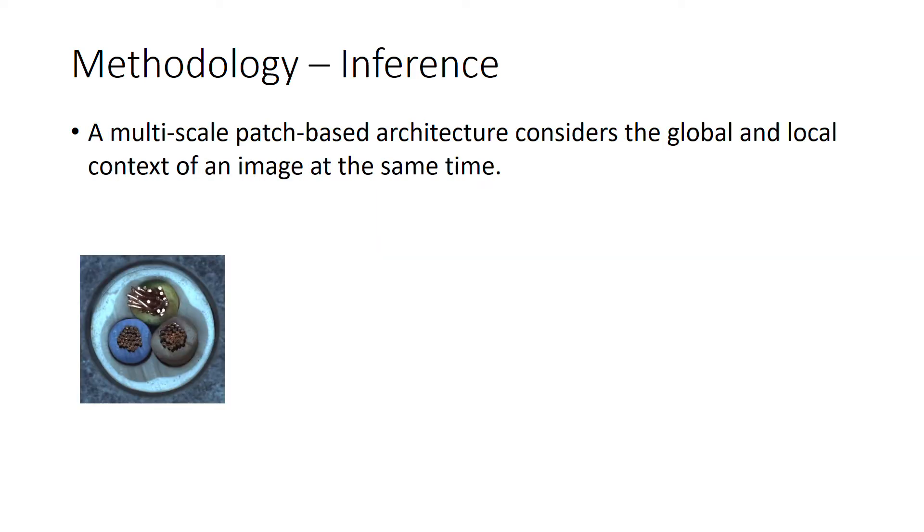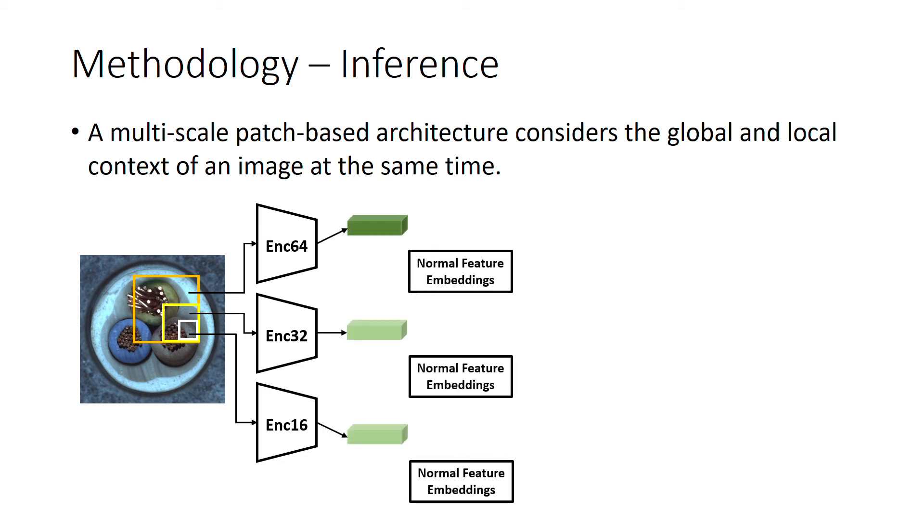For the inference stage, a test image will first be split into overlapped patches. Then the trained encoders extract features from these patches. For each patch, we evaluate its abnormality by calculating the shortest L2 distance between its feature embedding and all the normal feature embeddings in the training dataset.